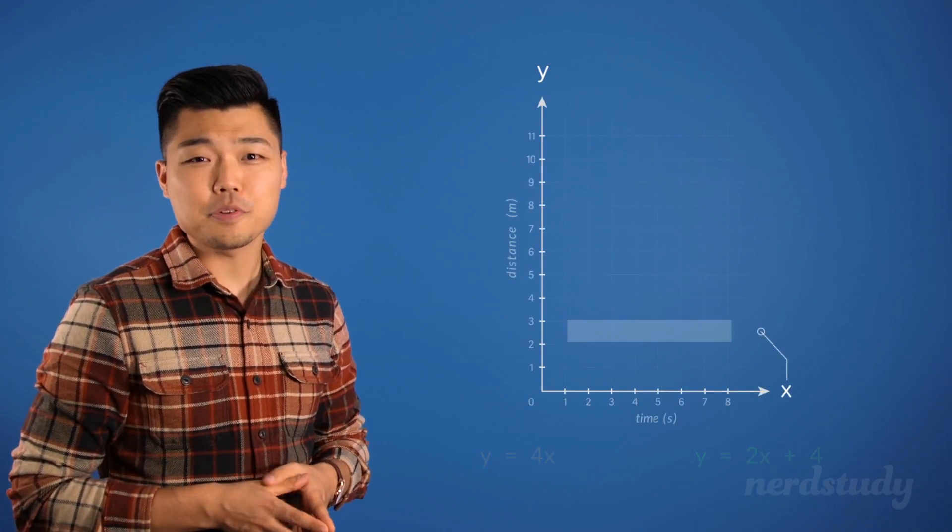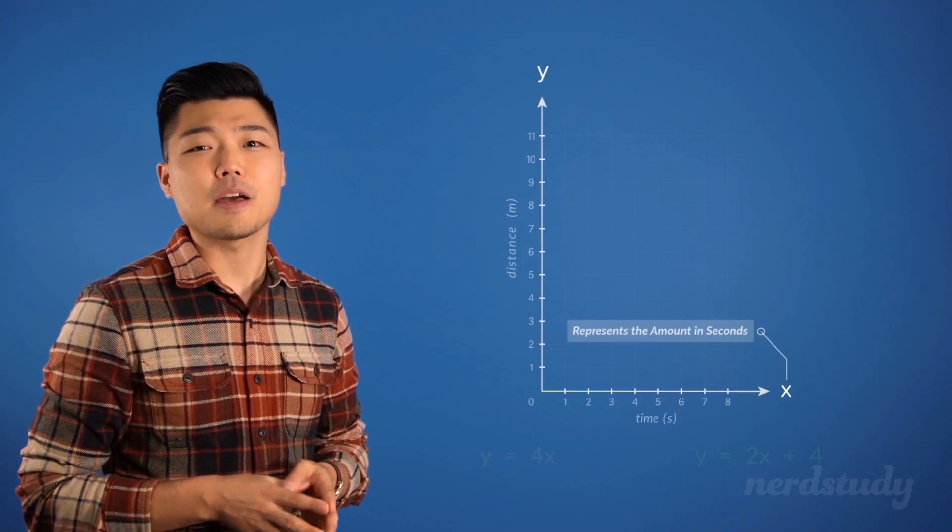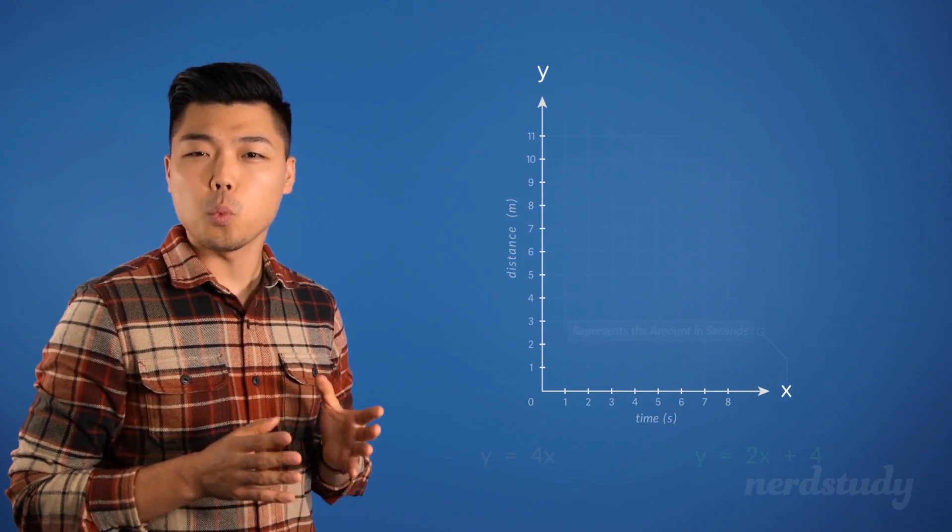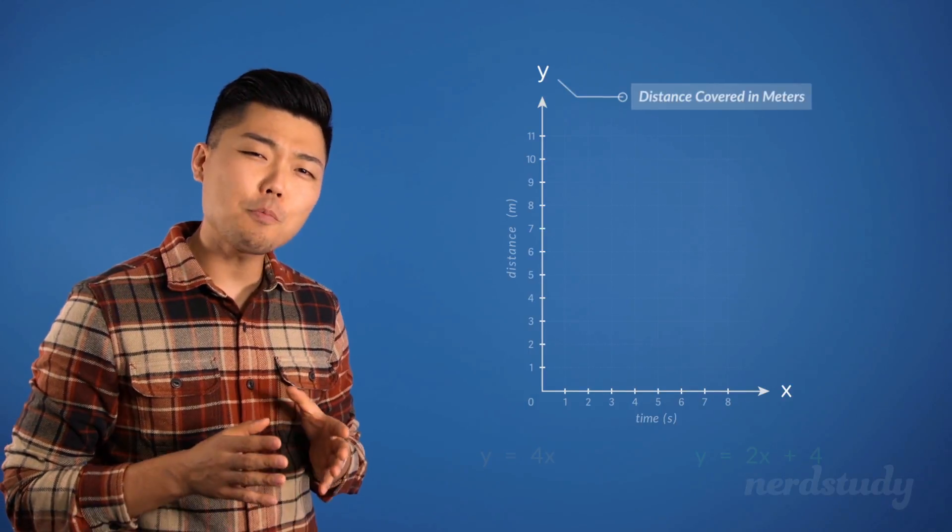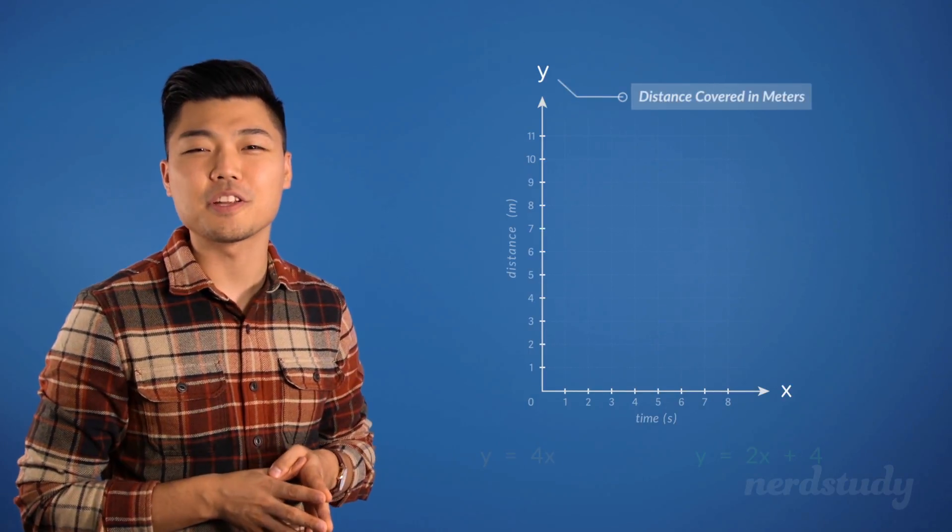Now, X represents the amount of time that passes by in seconds, and Y represents how much distance has been covered in meters.